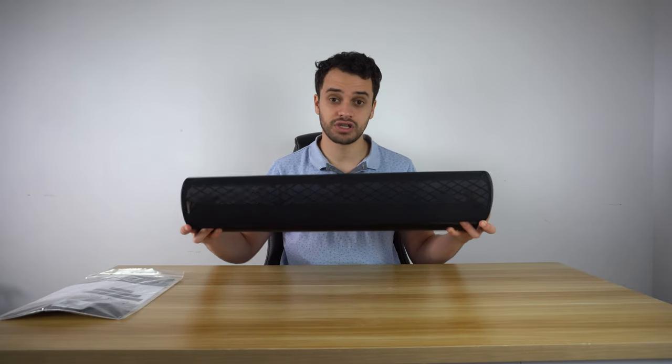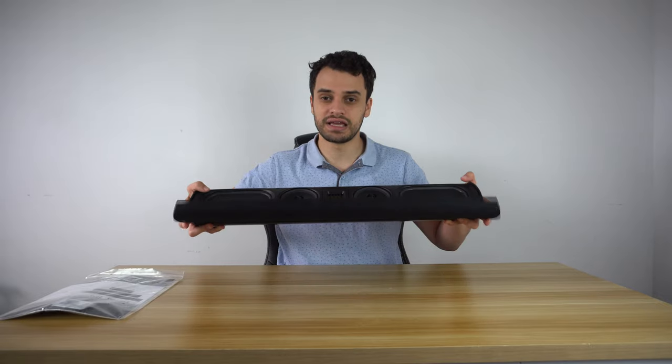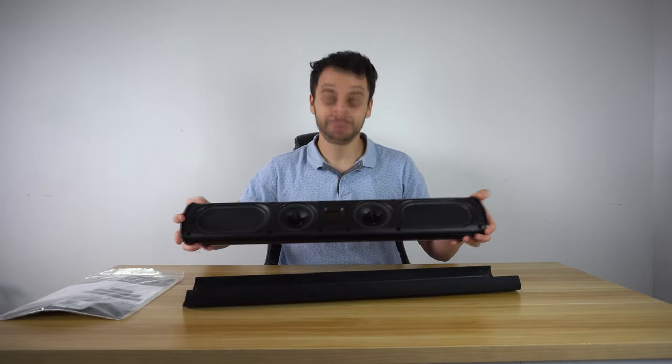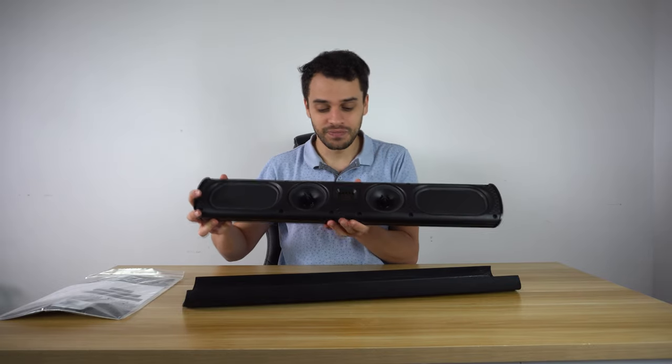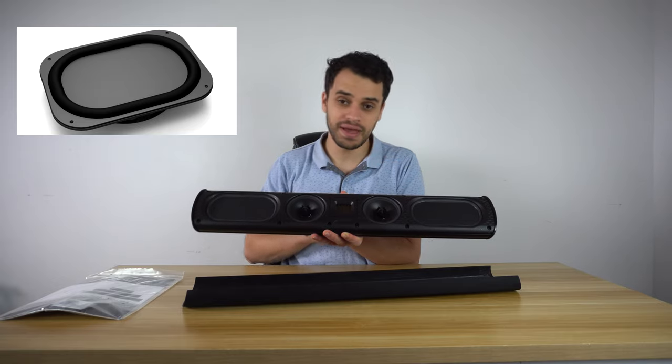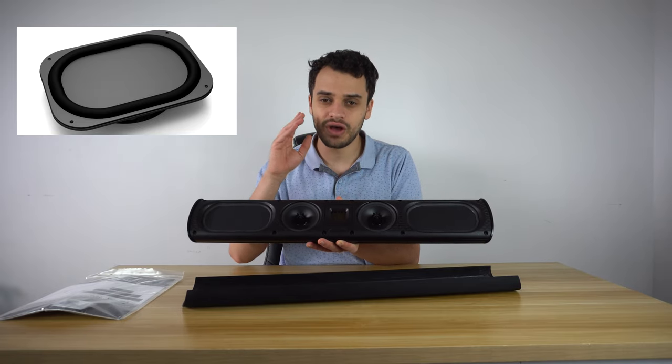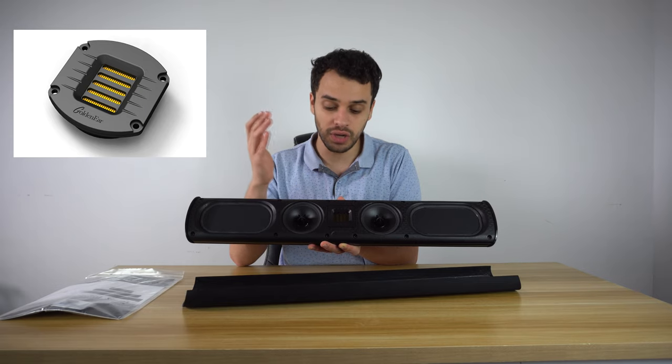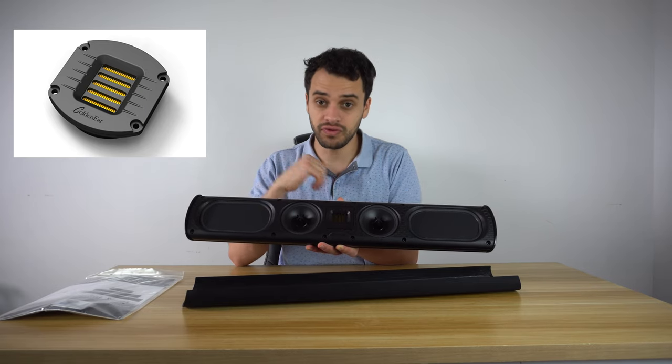The grill is magnetic, so it could be easily taken out and taken in. And that looks beautiful. Here you have your mid-range drivers, you have two bass radiators, and you have the almighty GoldenRibbon tweeter, which is what GoldenEar is known for.